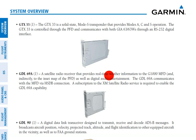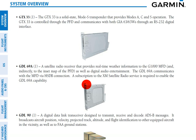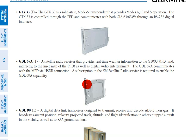Below that we have the GDL 69 Alpha, which is essentially a satellite radio receiver that gives you real-time weather information. Just like XM radio in a car, you'll need a subscription to XM satellite radio to receive the data and access this unit's capabilities.